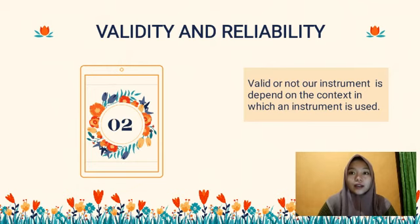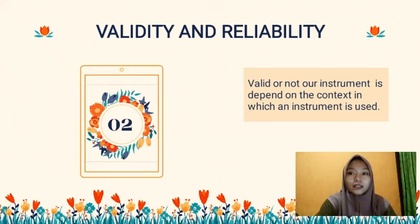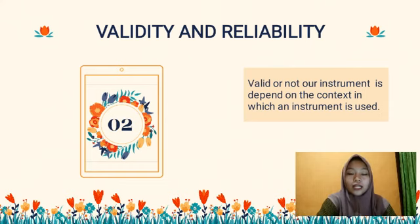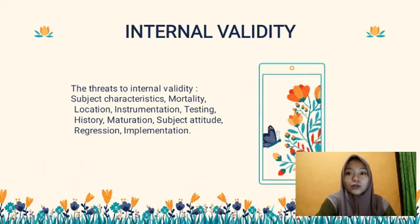And then validity and reliability. From validity and reliability, it is to know whether our research is valid or not — our instrument depends on the context in which it is used. An instrument may or may not yield a reliable and consistent score. If the data is unreliable, it cannot lead to validity. So the data must be reliable to make it valid. The threats to internal validity are: subject characteristics, mortality, location, instrumentation, testing, history, motivation, subject attitude, regulations, and implementation.